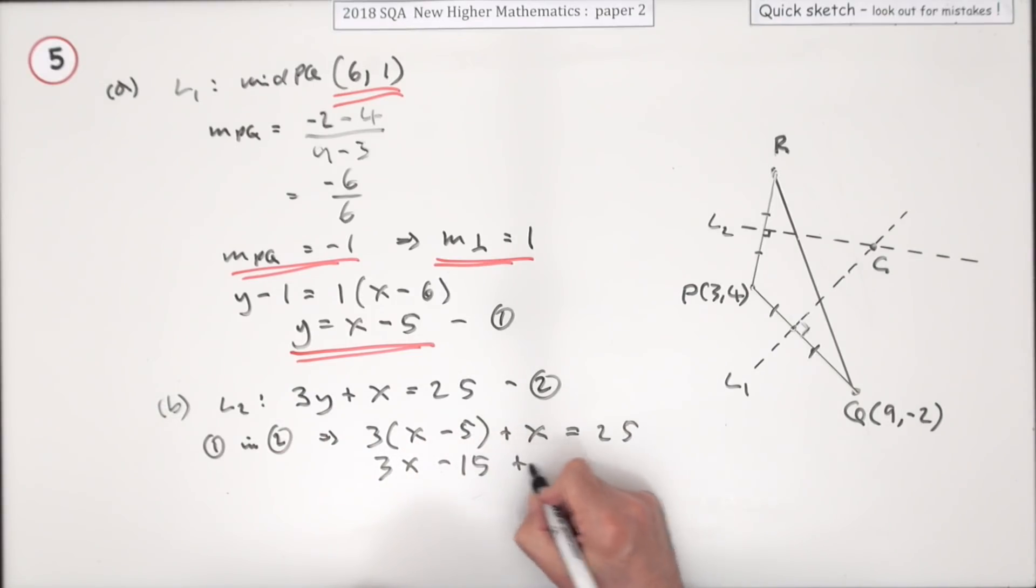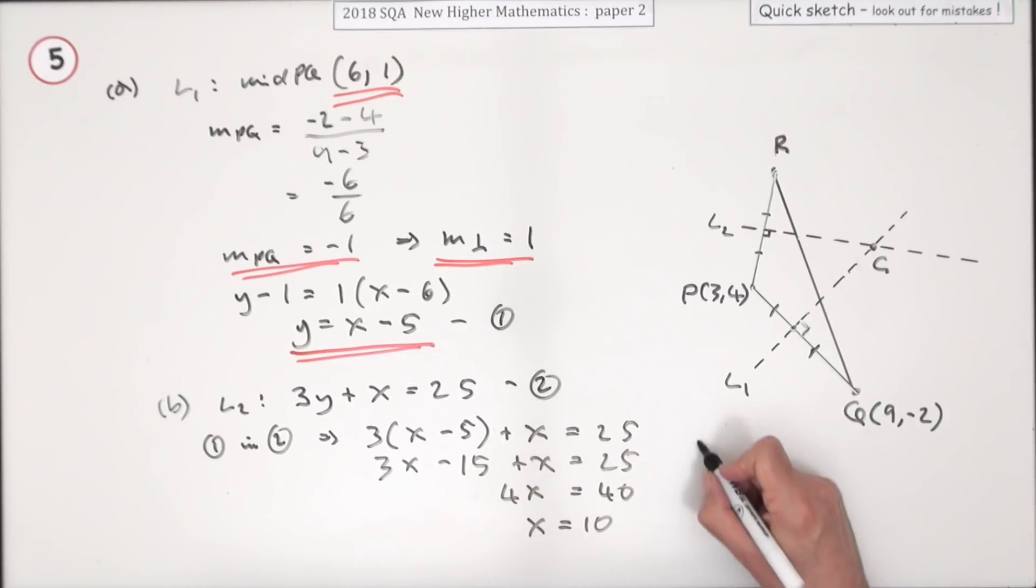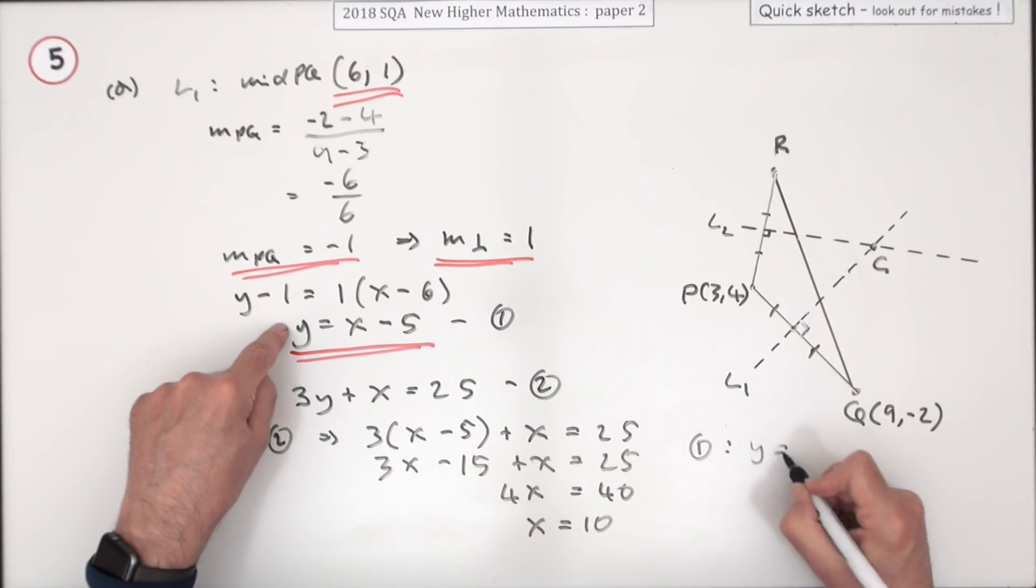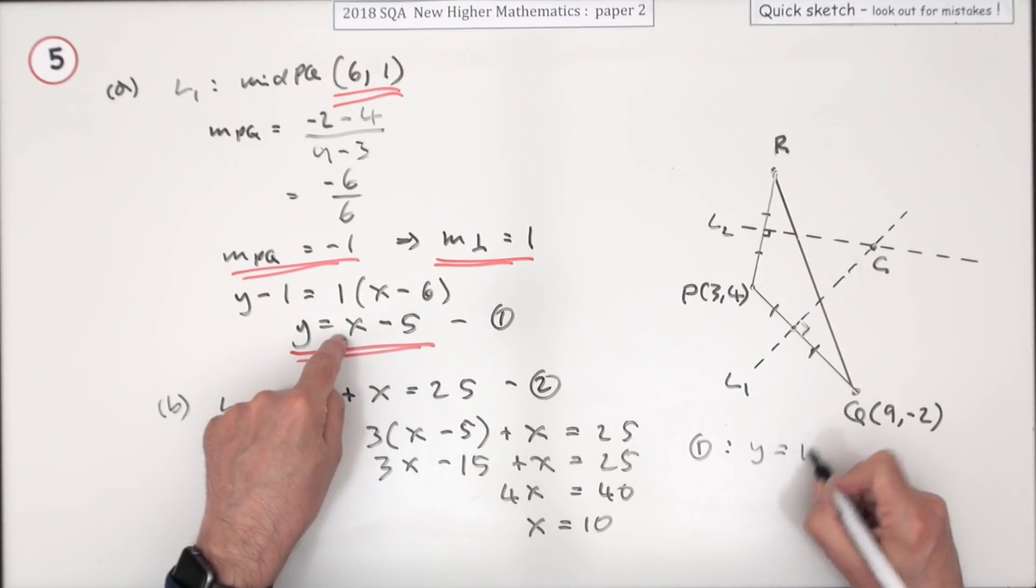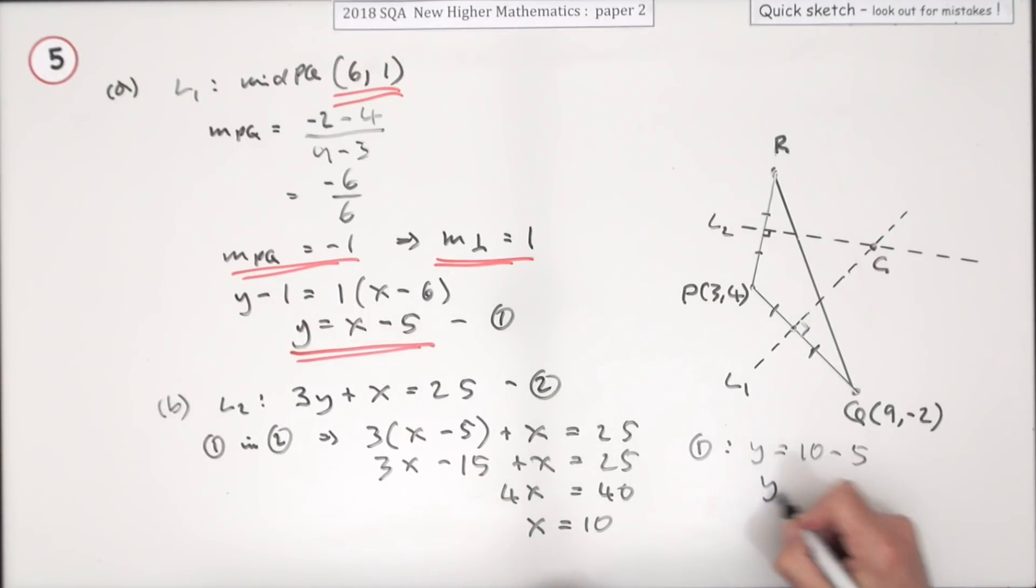3x minus 15 plus the x is 25. Put the x's together, there's four of them, bring that 15 over as add 15 to make 40, so x equals 10. I'm going to go back to equation 1 now because that's easier to get the y coordinate. Because now I know x is 10, so it's 10 take away 5, so y is 5. So C is the point (10,5).